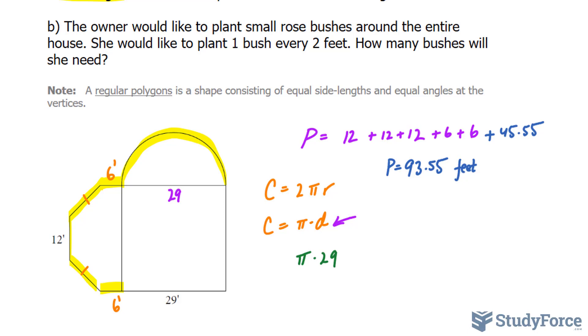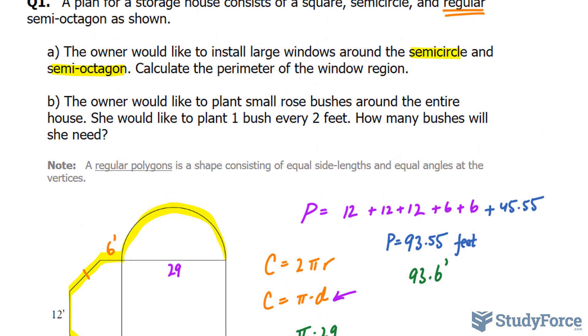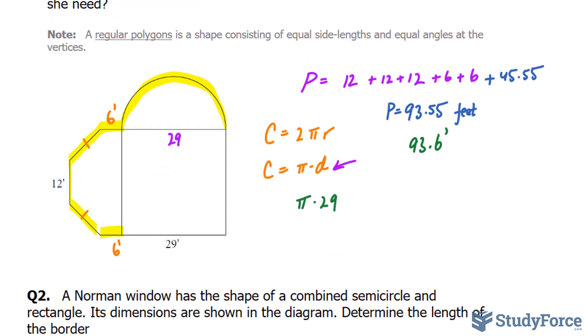If we want to round this to the nearest tenths, it would be 93.6 feet. In the second part of question one, the owner would like to plant small rose bushes around the entire house. She would like to plant one bush every two feet. How many bushes will she need? So unlike in question a, we actually need to find the perimeter around the whole house. So we'll take 93.55 and add 29, this side, plus another 29. That will give us the total perimeter.